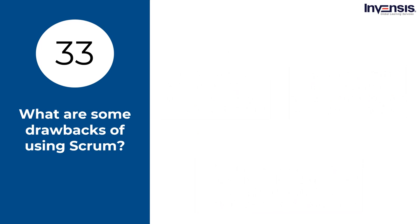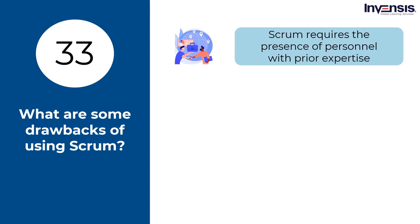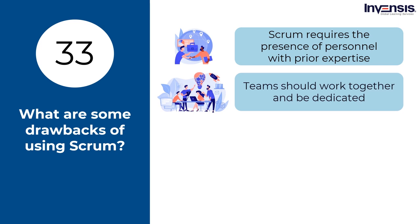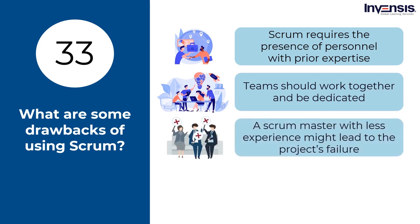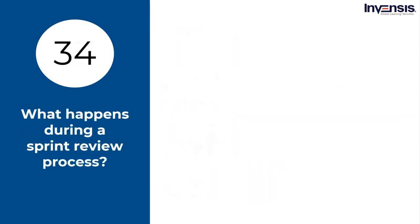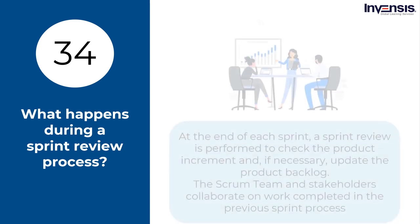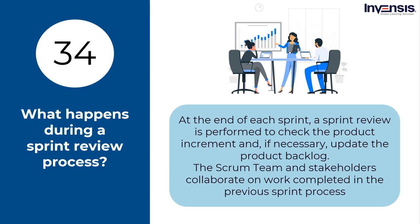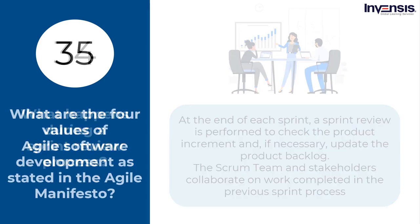What are some drawbacks to using Scrum? Scrum requires professionals with prior expertise; teams should work together and be dedicated to achieving goals; a Scrum Master with less experience might lead to the project's failure; tasks must be well stated otherwise the project will be full of errors; and it is better suited to smaller projects and more difficult to expand to larger, more complex ones. What happens during a sprint review process? At the end of each sprint, a sprint review is performed to check the product increment and, if necessary, update the product backlog. The Scrum team and stakeholders collaborate on work completed in the previous sprint, market research, timetable estimates, budget estimates, and possible capabilities. The sprint review lasts around 4 hours.